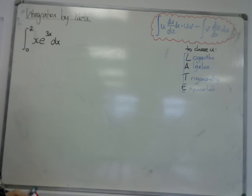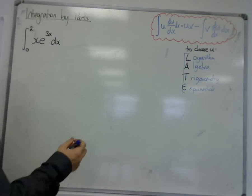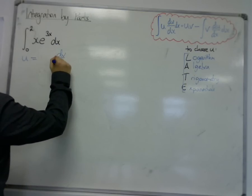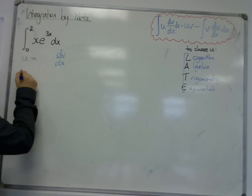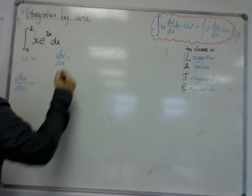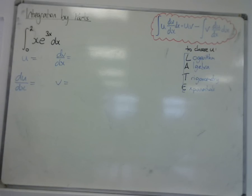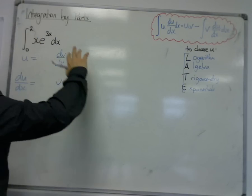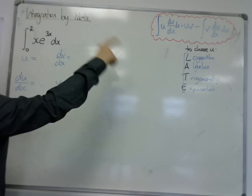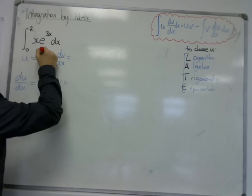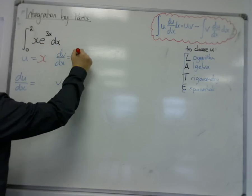So it works in the same way. We're still going to have to find and choose the u and the dv by dx. We're still going to have to find a du by dx and a v. So first of all, we're going to select the u. In all these cases, it's always been this x because that's the first term that I come across in my LATE law. So x and dv by dx is going to be e to the 3x.